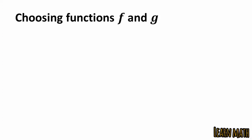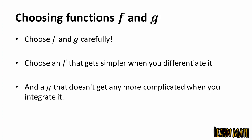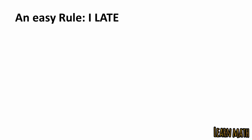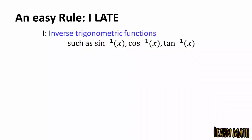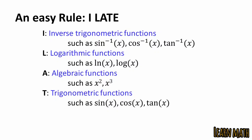When choosing the functions f and g, choose f that gets simpler when you differentiate it, and g that does not get any more complicated when you integrate it. An easy rule to remember is ILATE: I stands for inverse trigonometric functions such as sin⁻¹x, cos⁻¹x, tan⁻¹x; L stands for logarithmic functions such as ln x or log x; A stands for algebraic functions such as x squared or x cubed; T stands for trigonometric functions such as sin x, cos x, tan x; and E stands for exponential functions such as eˣ or 3ˣ. Using this rule you can easily choose f and g for integration by parts.